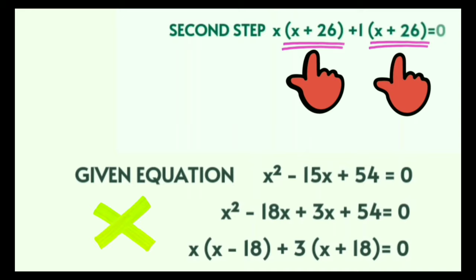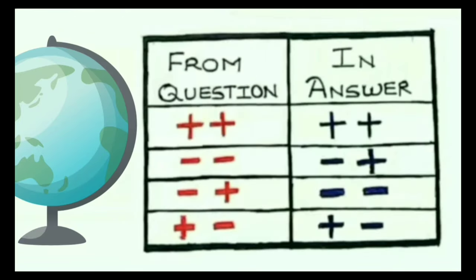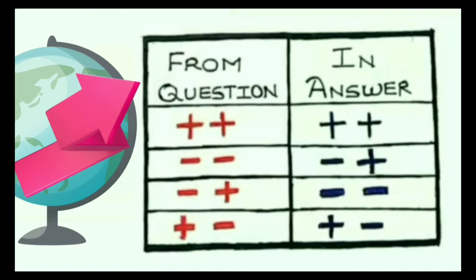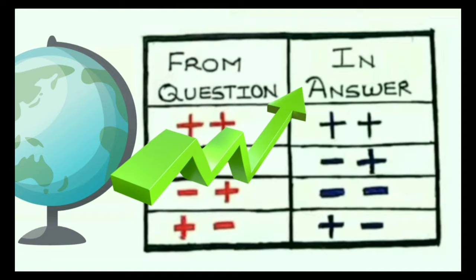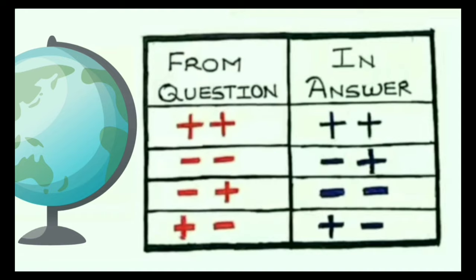At the beginning of this video I told you all to memorize the table — now I will explain its importance. There are two columns in the table. The first column, labeled 'from question,' is where you check the signs in the equation. From the 'answer' column, you apply the corresponding signs to the factors as per the signs in the given equation.